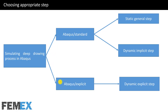As the simulation is highly nonlinear, we must use a nonlinear step. Both the Abaqus Standard and Abaqus Explicit solvers have nonlinear steps. If you want to use the Abaqus Standard solver you can use a static general step or dynamic implicit step, and if you want to use the Abaqus Explicit solver you can use a dynamic explicit step.